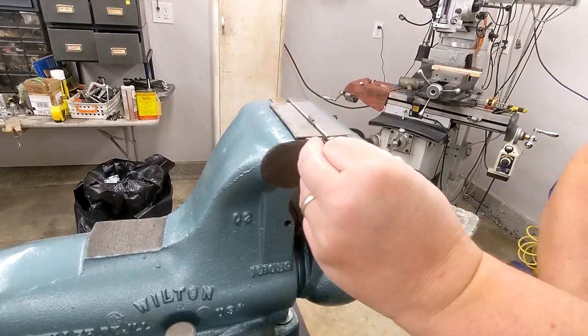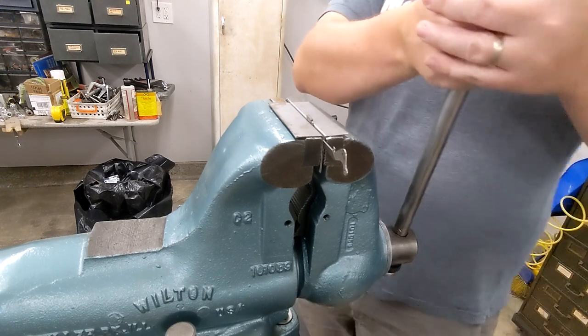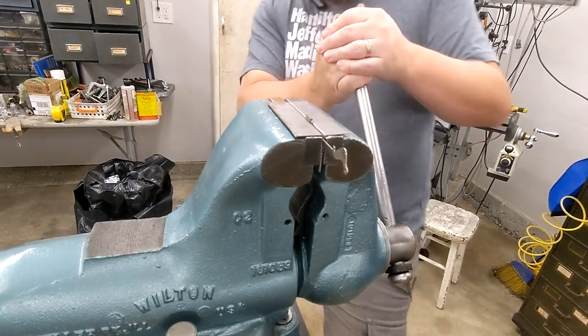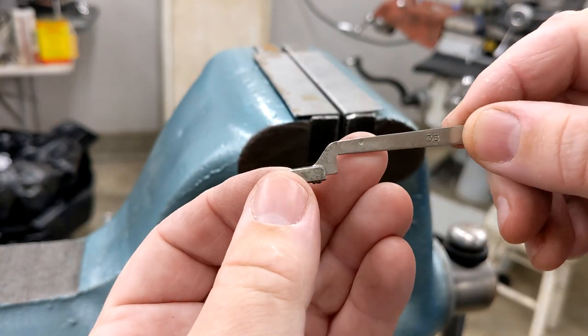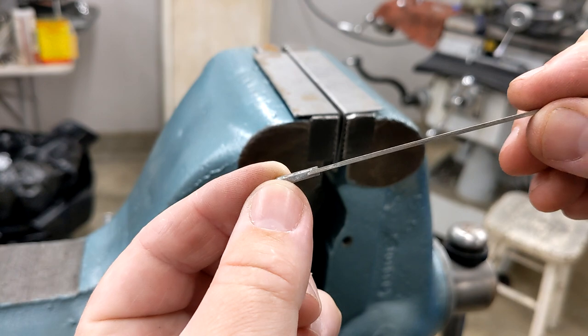First, I would roughly straighten them with the pliers, and then put them in the large Wilton vise to press them as flat as possible, which was going to be important since they'd be stacked next to each other.